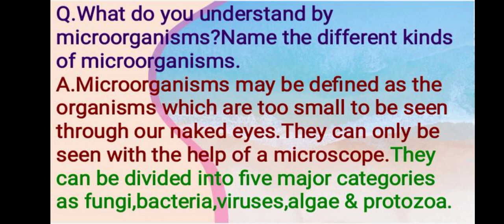First question: what do you understand by microorganisms? Name the different kinds of microorganisms. Microorganisms may be defined as the organisms which are too small to be seen through our naked eyes. They can only be seen with the help of a microscope. They can be divided into five major categories: fungi, bacteria, viruses, algae, and protozoa.